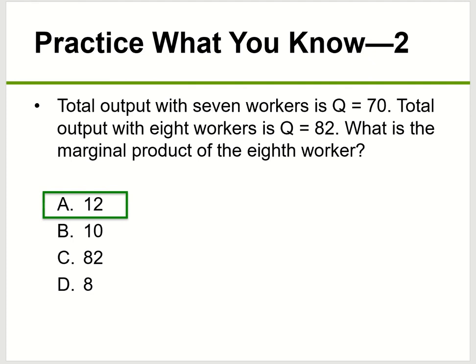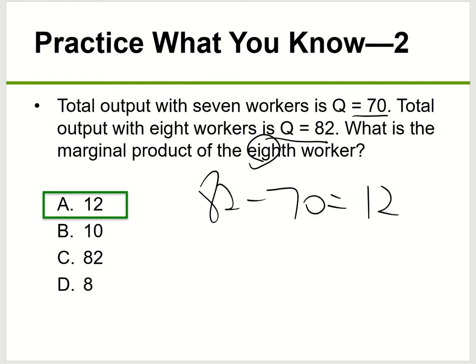A couple of practice problems. First: if your total output with seven workers is 70 and your total output with eight workers is 82, what is the marginal product of the eighth worker? It would be the difference between 82 and 70, which is 12. Use total production of eight people minus total production of seven people; that difference is 12. That's your marginal product — how many more outputs you get from the eighth worker you hire.